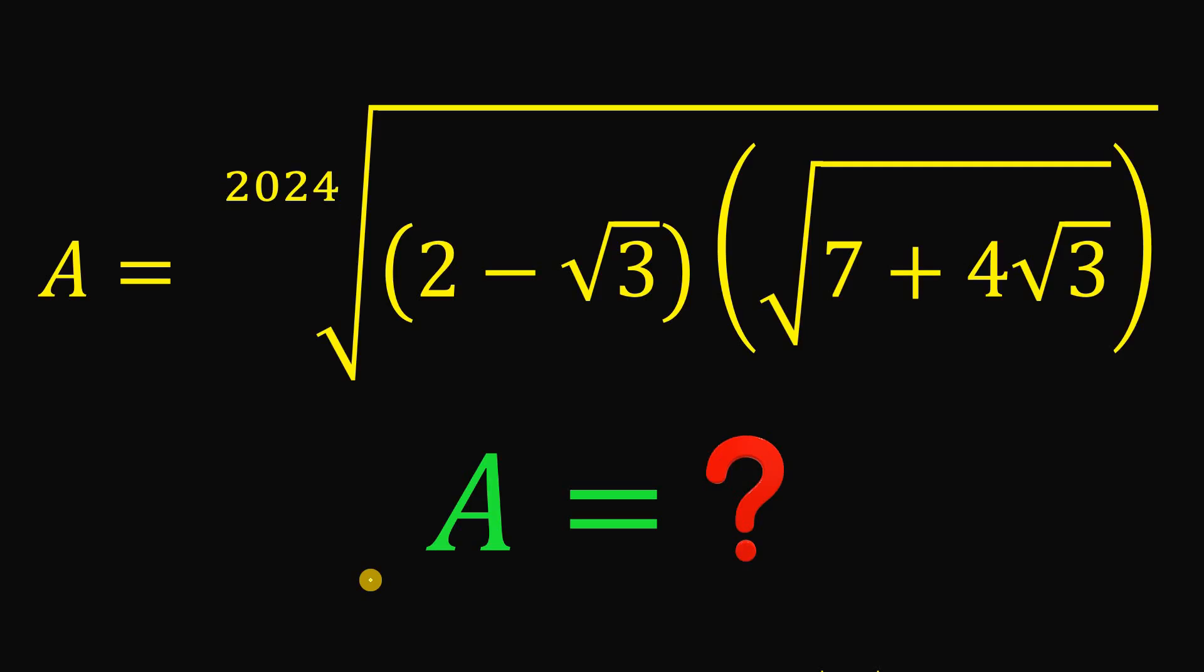Simplify this expression without using any calculator. Here's the question. A equals 2024 root of 2 minus root 3 multiplied by square root of 7 plus 4 times square root of 3. So what is the simplest form of A?